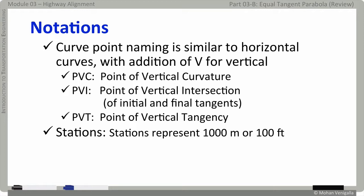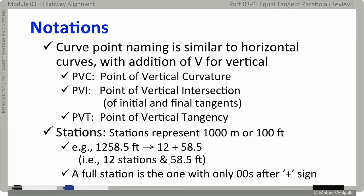Each station is a thousand meter or a hundred feet. One station is a hundred feet. So, if you see 1258.15 feet, you will see the designation as 12 plus 58.5. That represents 12 stations and 58.5 feet. And here, 12 is considered the full station with only zeros after the plus sign.